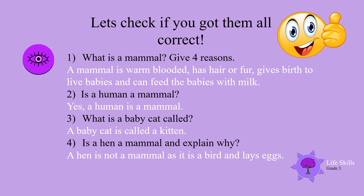Number 3: What is a baby cat called? That's right — a baby cat is called a kitten. Number 4: Is a hen a mammal? And explain why. A hen is not a mammal, as it is a bird and lays eggs.